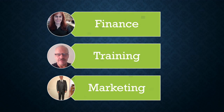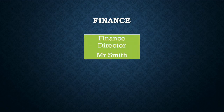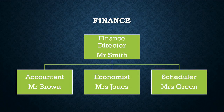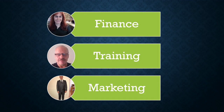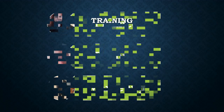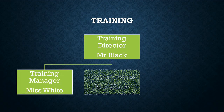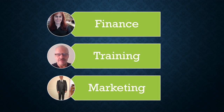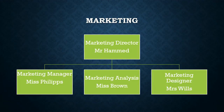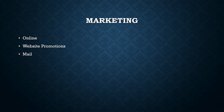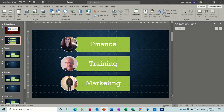If I click on the finance department, I go through the finance department — it's showing a hierarchy and then a couple of bullet lists, and then it comes back to this front screen. The same thing for the training department: pressing enter goes through the different elements of the training department and then a few bullet lists. Lastly, the marketing department does exactly the same thing, and when it's finished it returns to this front slide.